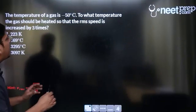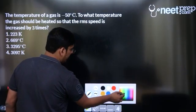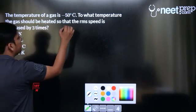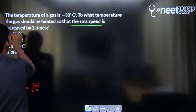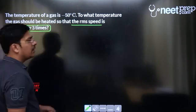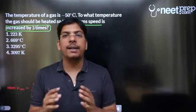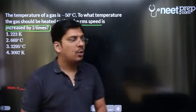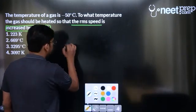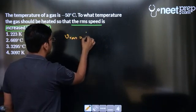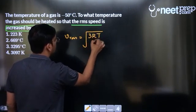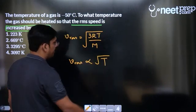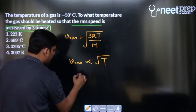The temperature of a gas is minus 50 degrees celsius. To what temperature the gas should be heated so that the rms speed is increased by 3 times? Important thing to understand: rms speed is increased by 3 times, that means rms speed should be 4 times of the initial one. Now you know the formula for rms speed is under root 3 RT by molar mass, but we should know that rms speed is directly proportional to square root of temperature in kelvin.